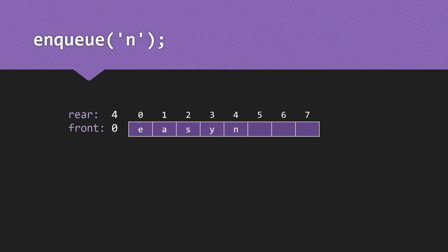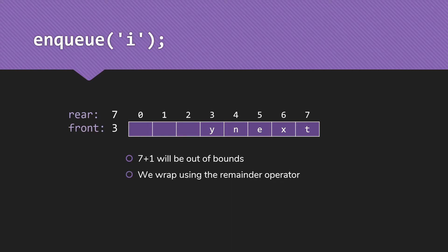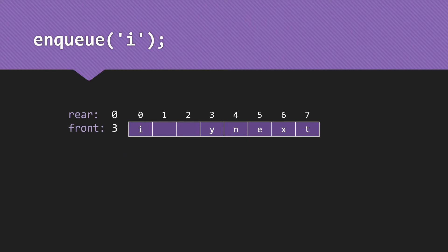Let's look at what happens. We enqueue so it goes into index four. Dequeue a couple of things, moving the front index. Then as we enqueue more things, we're increasing the rear index. At some point, if we simply add one to the rear, seven plus one would be eight — out of bounds, causing an error. So we're going to wrap around the array using the remainder operator: rear gets rear plus one mod our array size. That way we just keep going around and around the array, and we'll do the same thing as we increase front. So enqueuing will cause rear to wrap around to zero.